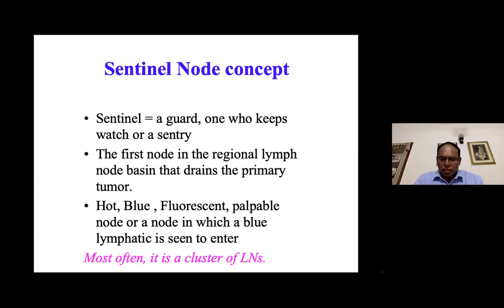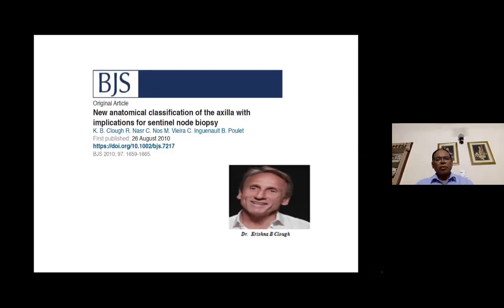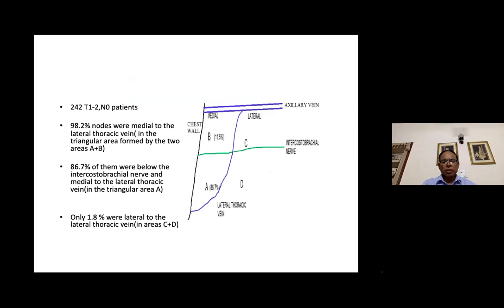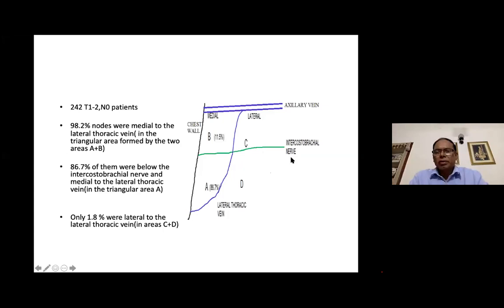Dr. Krishna Klau from Paris Institute beautifully conducted a study published in the British Journal of Surgery in August 2010, examining where sentinel nodes are located. This is a pictorial depiction of their data. The axilla is divided by two lines: a vertical line — the lateral thoracic vein — and a horizontal line — the intercostobrachial nerve, which is the lateral cutaneous branch of the second intercostal nerve, supplying the skin of the armpit area.